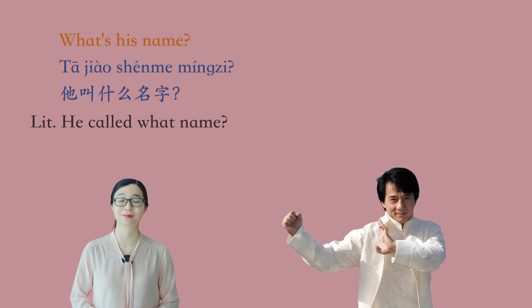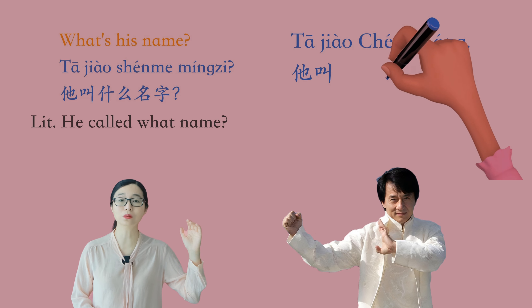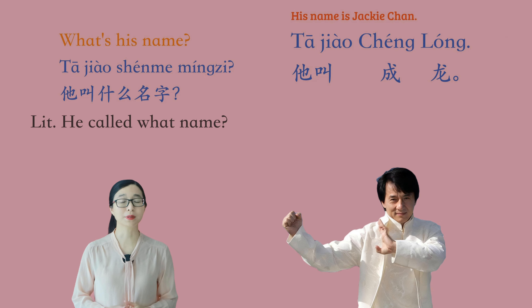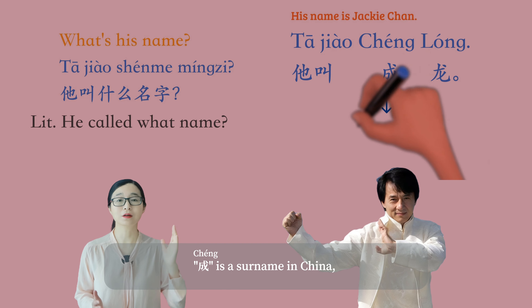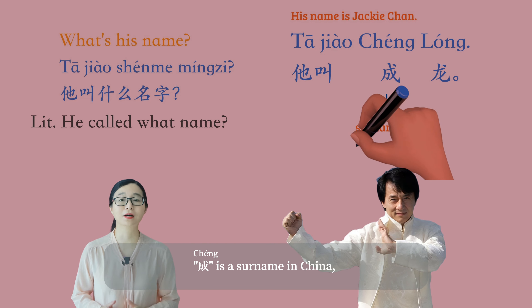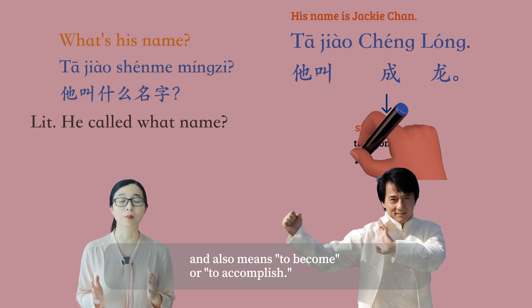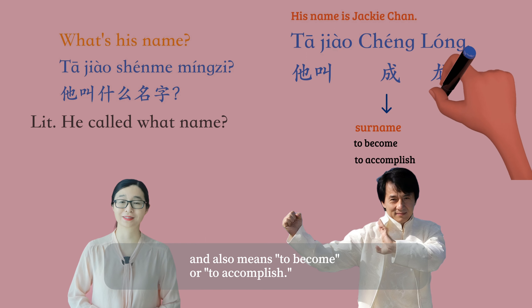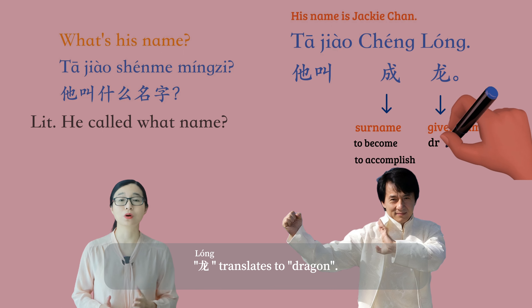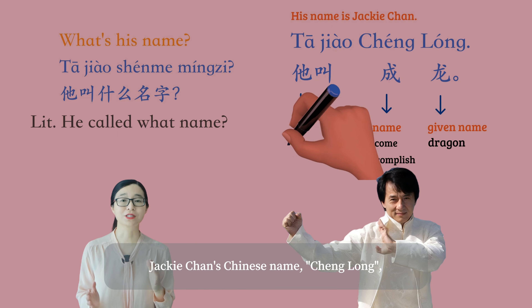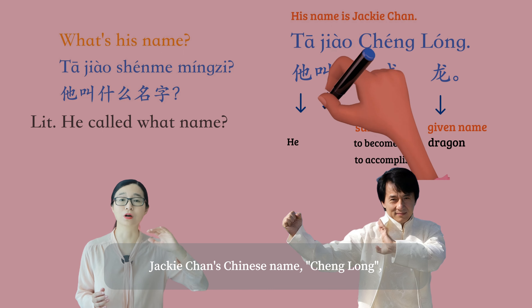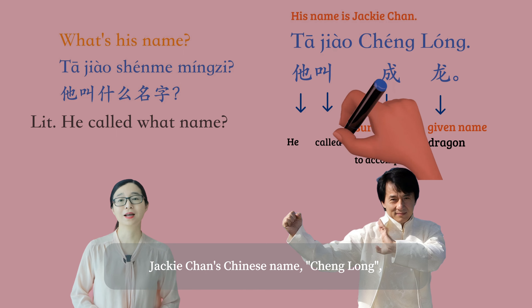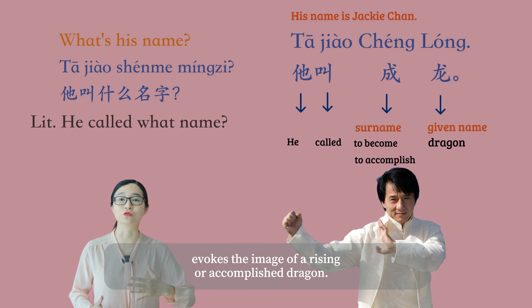他叫什么名字? 他叫成龙。 His name is Jackie Chan. 成 is a surname in China and also means to become or to accomplish. 龙 translates to dragon.